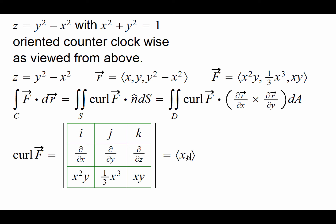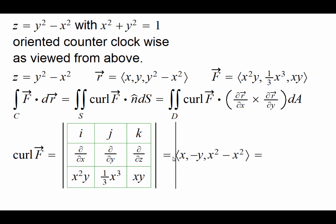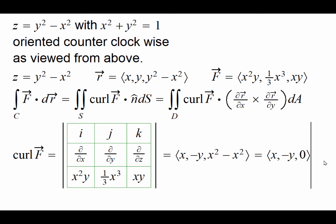For the second component, looking at the cofactor of j: d/dz of x²y is 0, and then minus d/dx of xy which is simply −y. For the third component, the cofactor of k: the derivative of one-third x³ is x² (since the threes cancel), and then minus d/dy of x²y which is also x². So the curl of F comes out as (x, −y, x² − x²) — that is, (x, −y, 0).